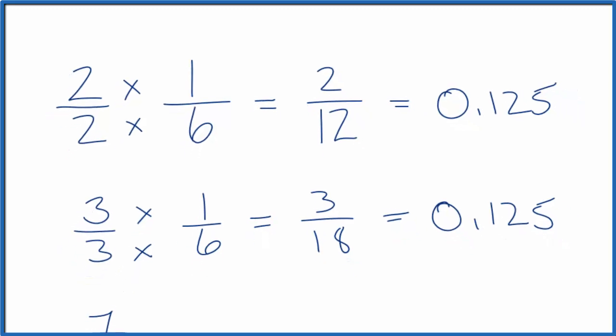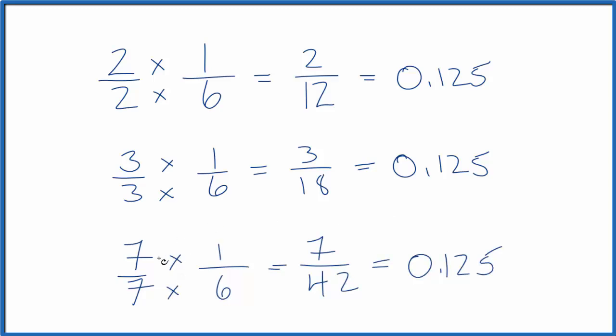Now, how about 7 over 7? So again, since we multiplied by 7 over 7, which is just 1, we end up with 7/42. That's an equivalent fraction to 1/6.